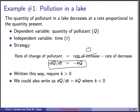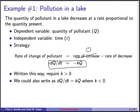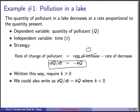To check that this makes sense: Q is positive because the quantity of pollutant can't be negative. If k is positive, then minus kQ is negative, so dQ/dt is negative, meaning Q is decreasing — that's consistent. If instead k were negative, we'd get a positive derivative and Q would be increasing, which is not what we intend to model. It's always good to state what sign your constants must have.